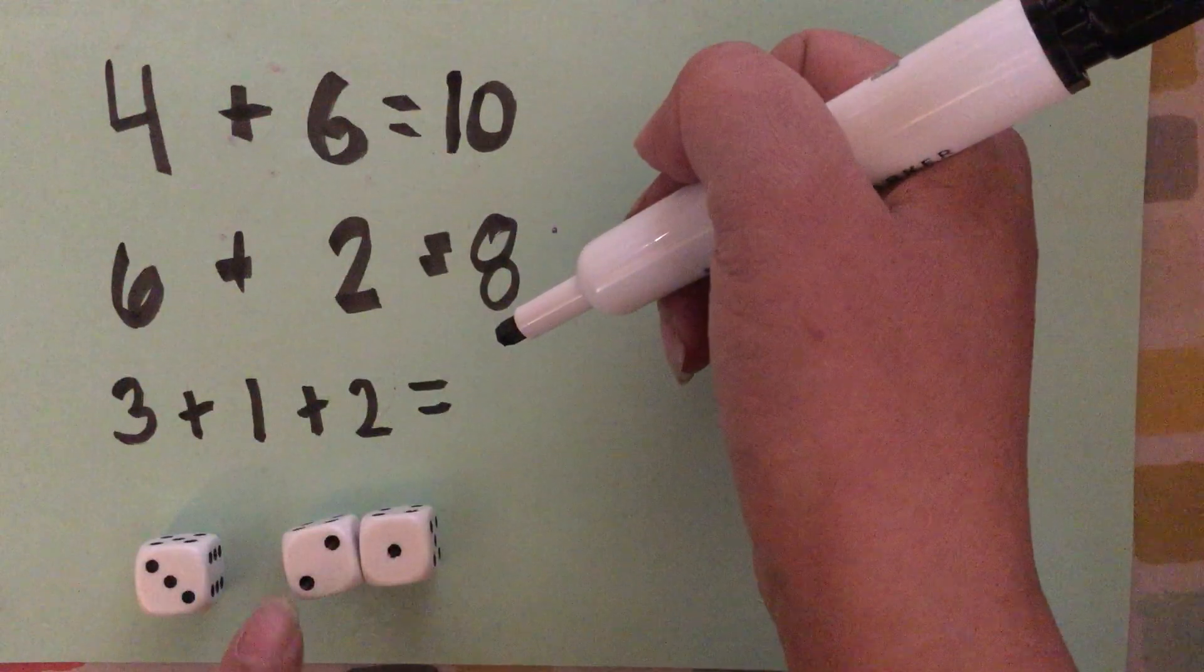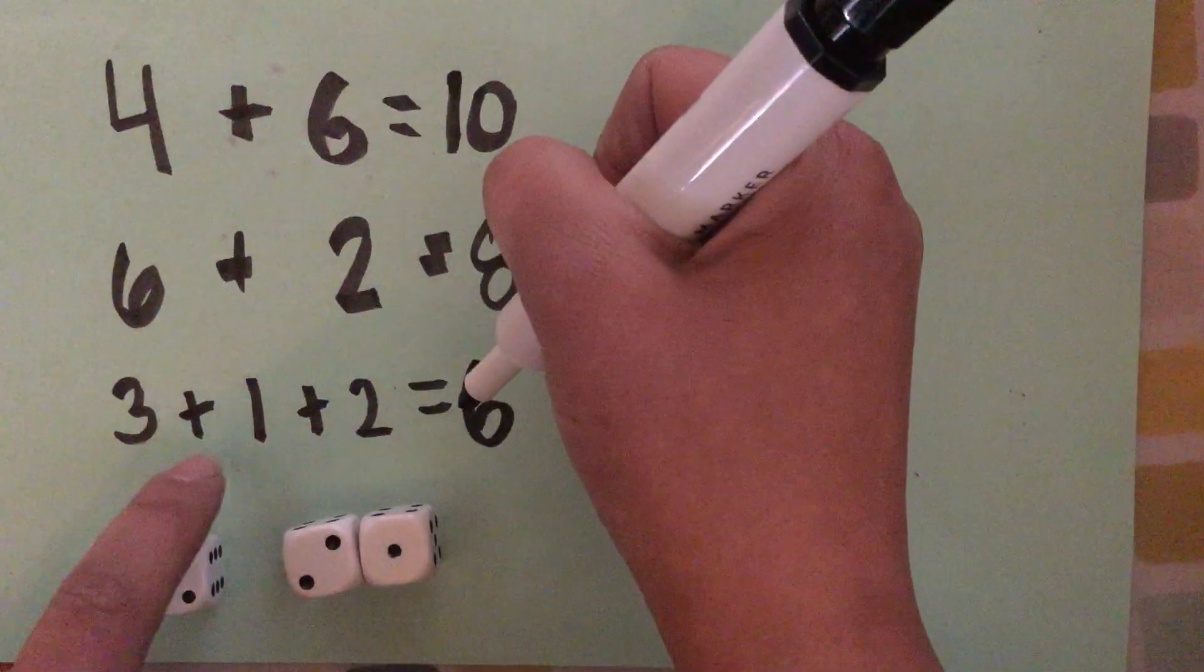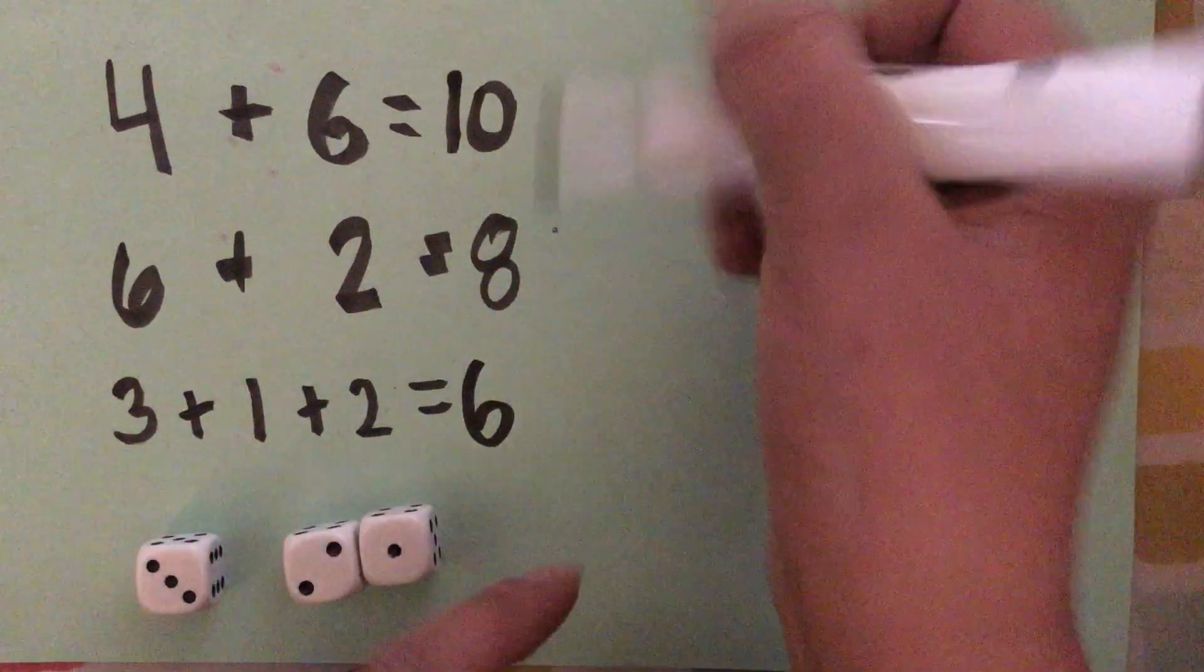Three, four, five, six. Three plus one plus two equals six.